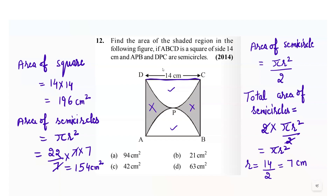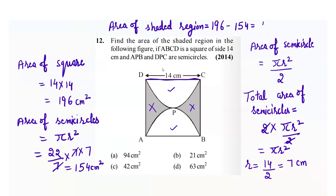Now we have to find out the area of the shaded region. The area of the shaded region equals the total area of the square minus the area of the semicircles, and when we solve it, the area would be equals to 42 centimeter square. That means the correct option for this question is part C.